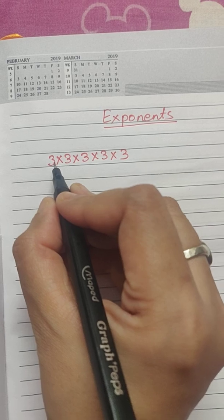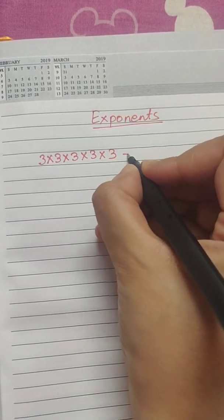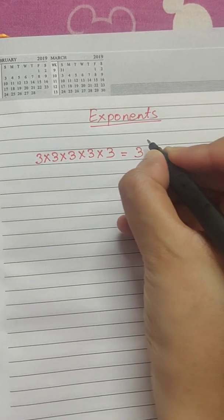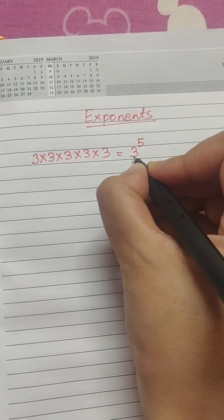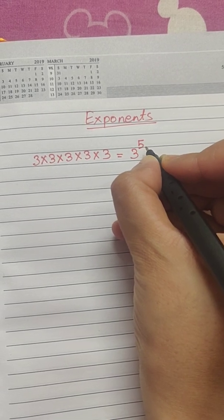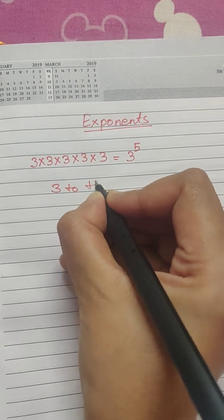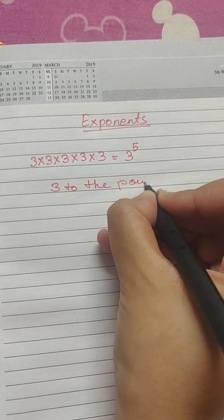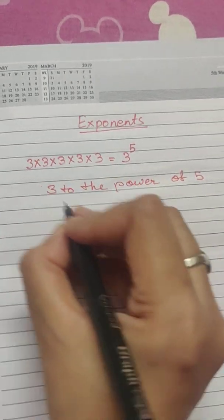So, instead of writing 3 multiplied by itself 5 times, there is another way to write it, which is like this. We call it 3 raised to the power of 5 or 3 to the power of 5. In this case,